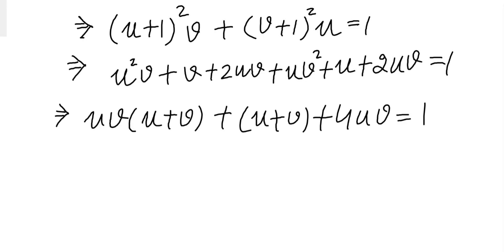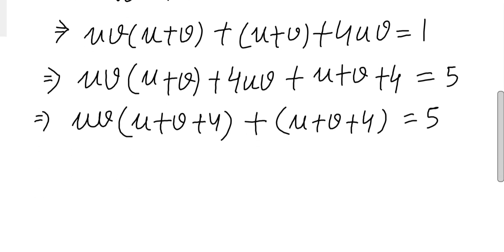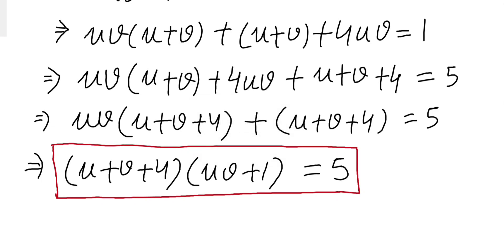Now we will try to factorize, so what we will do, we will add 4 to both sides. So adding 4 to both sides will result in this step and then again this and this.